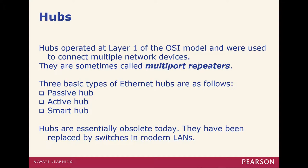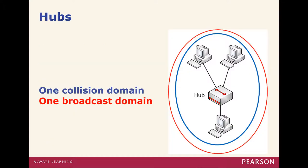Before we talk about switches, we need to understand what a hub is. A hub is a layer 1 repeater — basically it takes the signal and clones it. There are three basic types of Ethernet hubs: passive, active, and smart. But essentially in today's network, hubs don't exist anymore. With a hub, we have one collision domain and one broadcast domain.